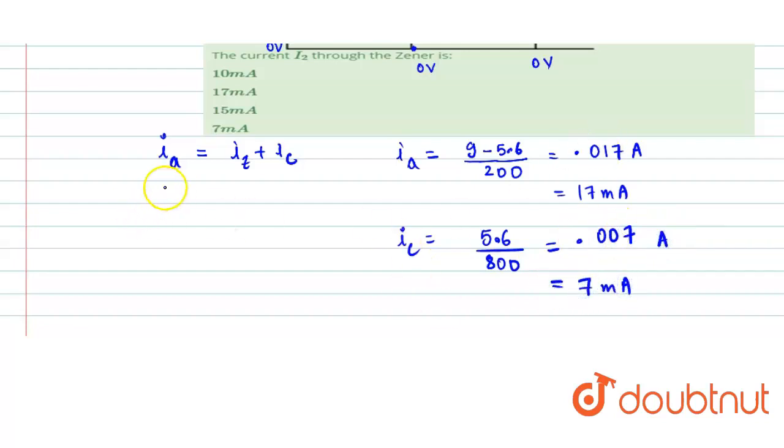Now let's put the values. IA was 17 milliampere, which equals IZ, the current in the Zener diode, plus IC, which is 7 milliampere. So the current in the Zener diode would be 17 minus 7, which is 10 milliampere.